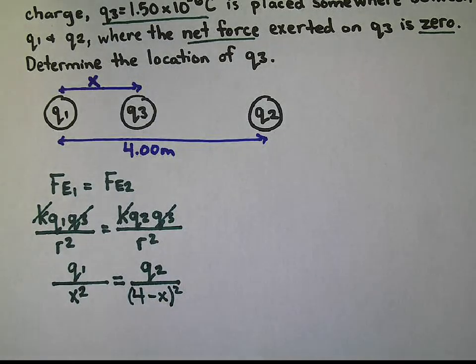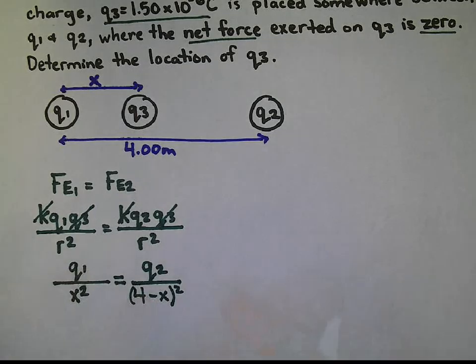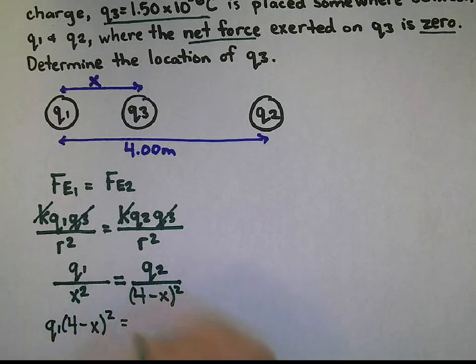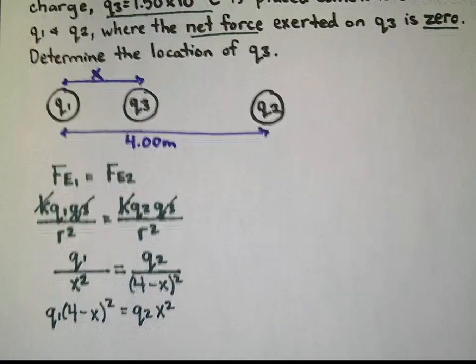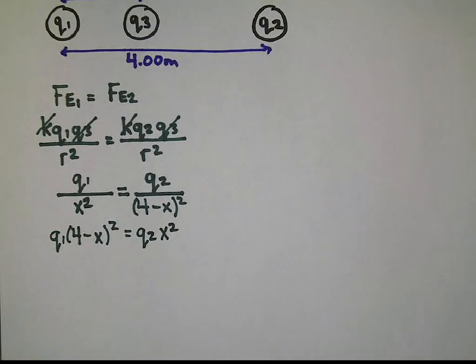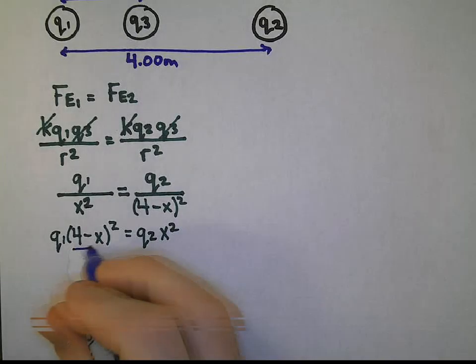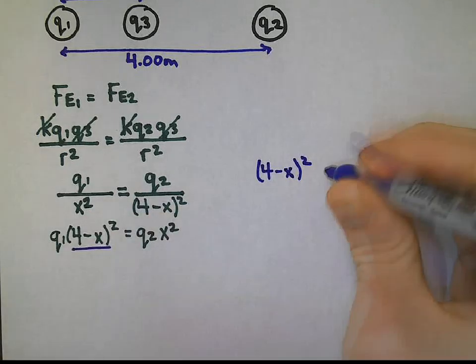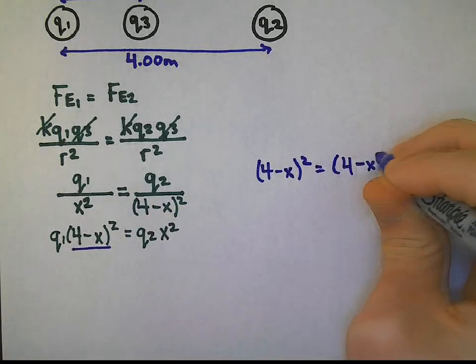So we're going to cross multiply to make this a little bit easier to solve. What we will have is Q1, which will be multiplied by 4 minus x squared, will be equal to Q2 x squared.